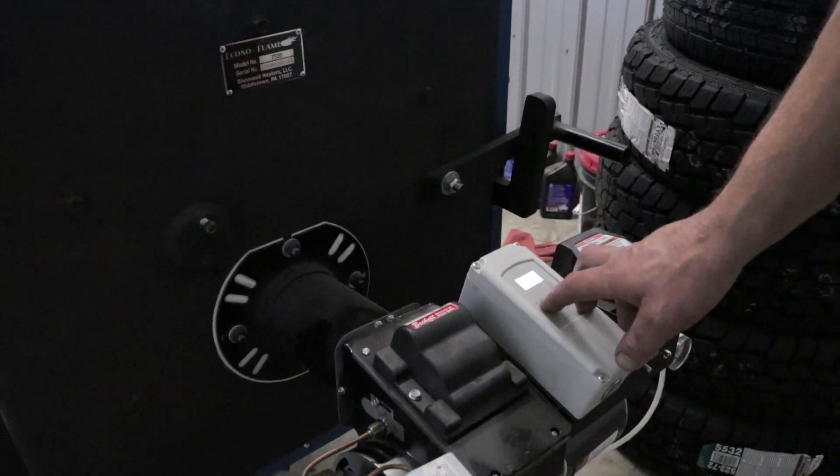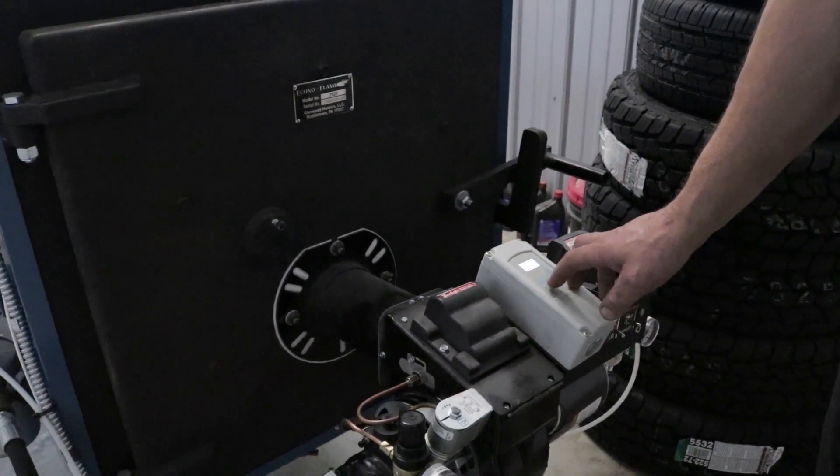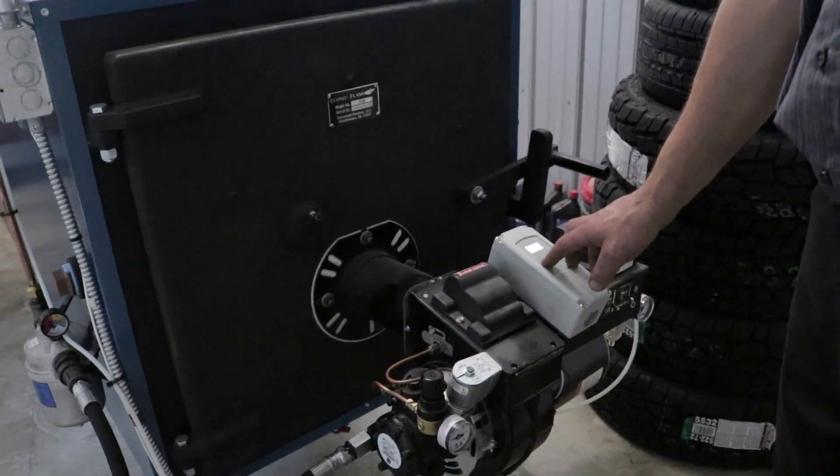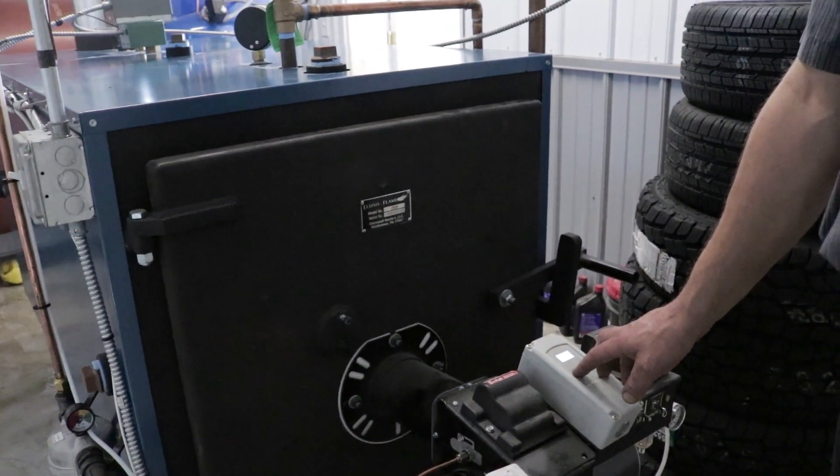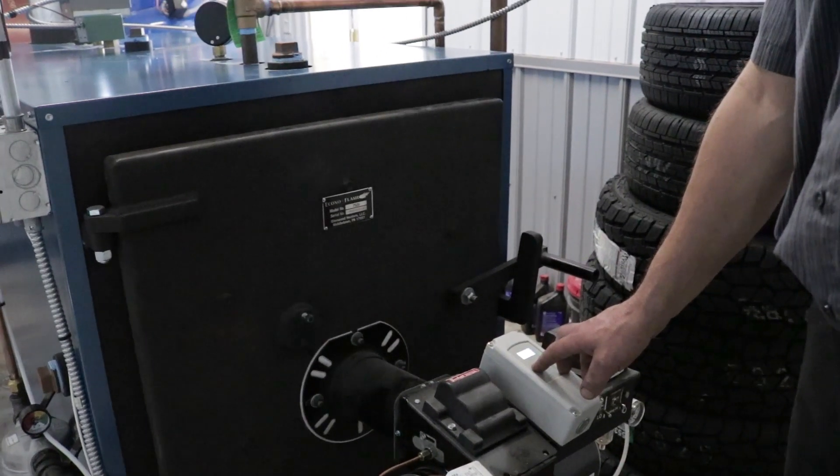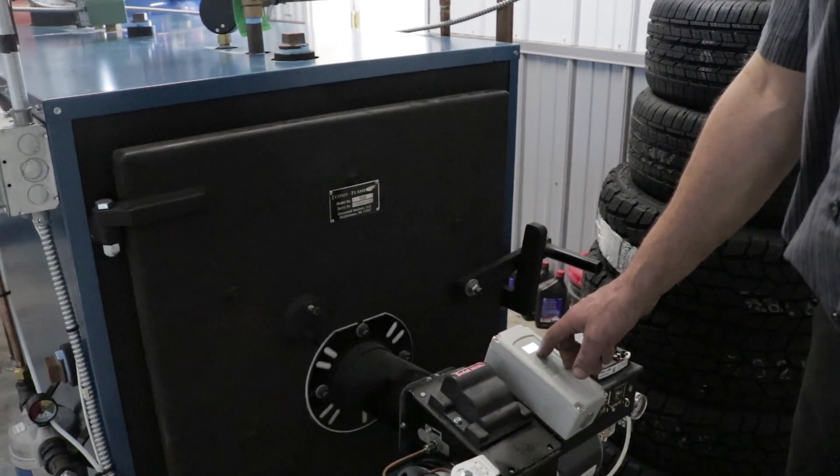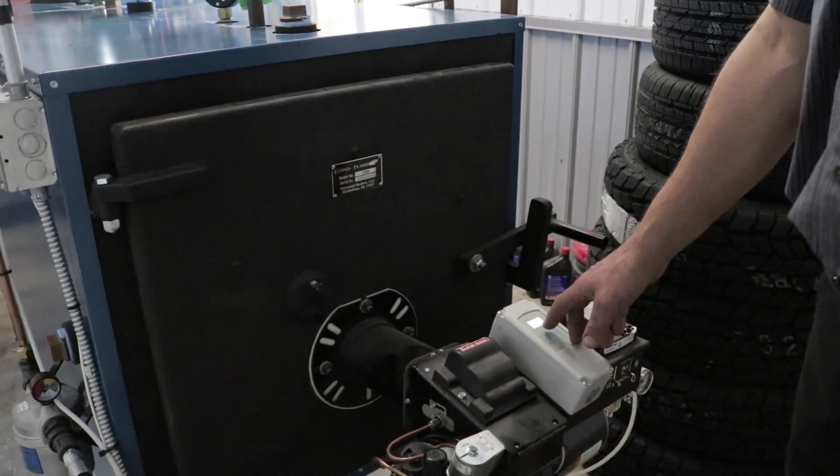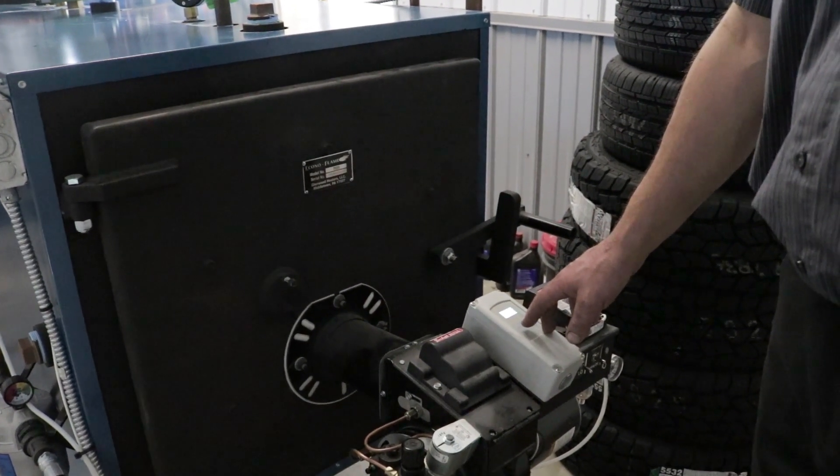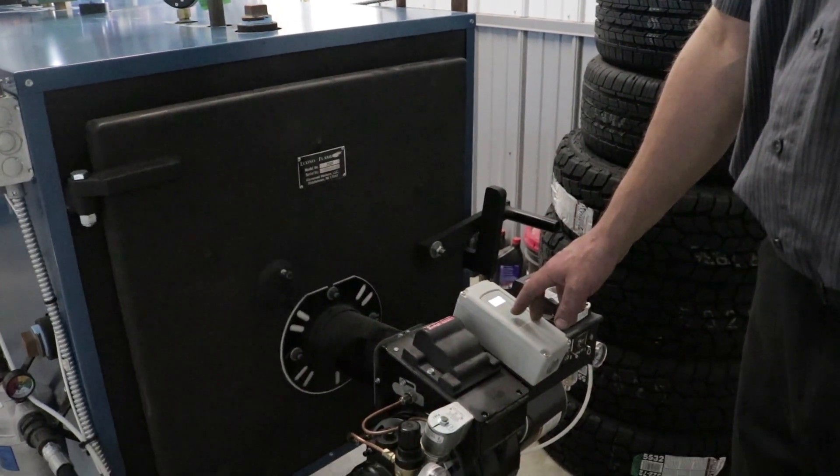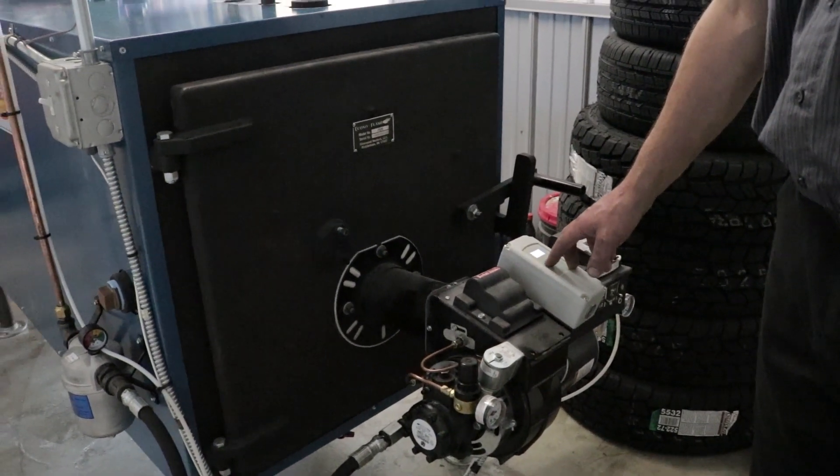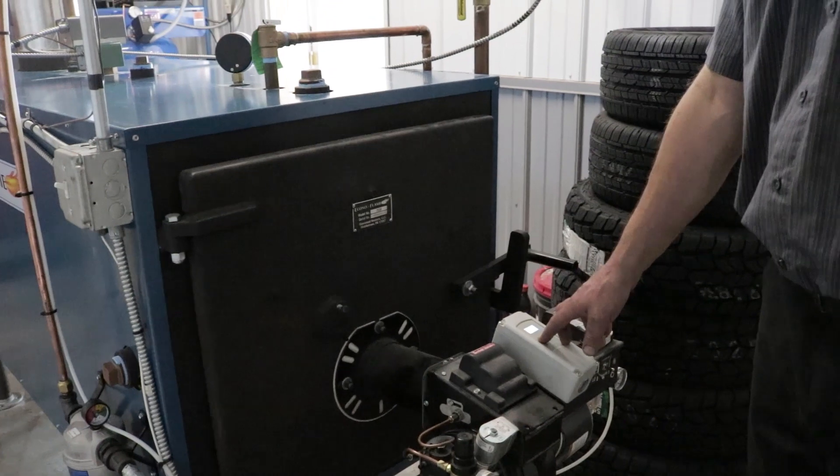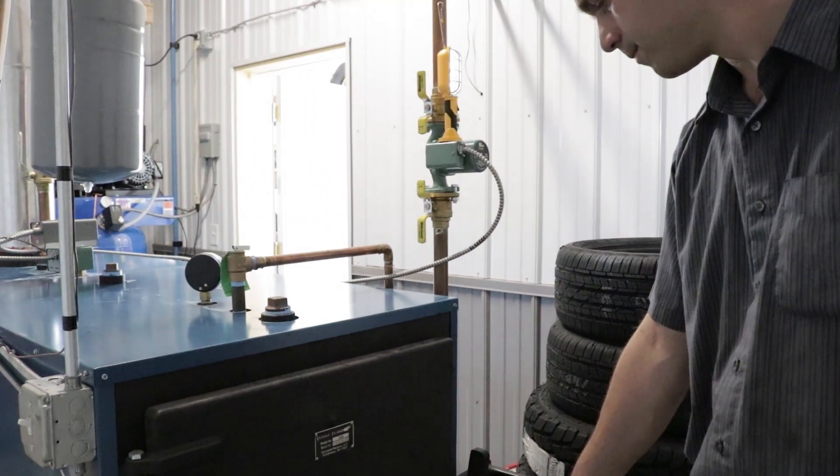This thermostat controls the whole function of the burner. If the oil is not warm enough, the burner will not be able to run. Here we have it set at 160 degrees—it will not be able to run unless the oil temperature is at 160. If the oil temperature reaches 180, then the preheater shuts off.